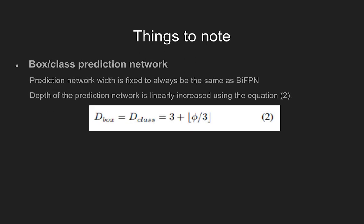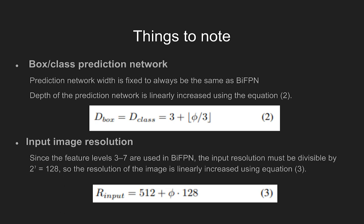The width of the prediction network is fixed to always be the same as BiFPN, but the depth of the prediction network is linearly increased using equation 2. Regarding input image resolution, BiFPN uses feature level from 3 to 7. The input resolution must be divisible by 2 raised to the power of 7, so the resolution of the image is linearly increased using equation 3.